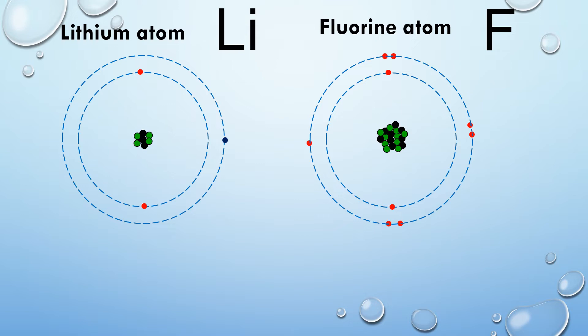The lithium atom has an electron arrangement of 2,1 and the fluorine atom has an electron arrangement of 2,7. So obviously in order to get a stable, full outer valence shell, the lithium will lose or donate one electron and the fluorine is happy to accept one electron.